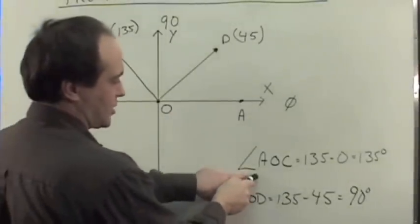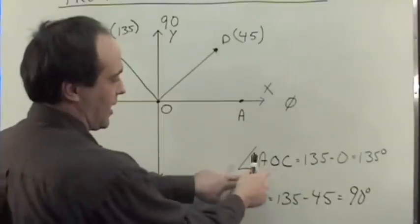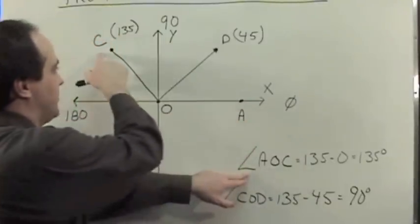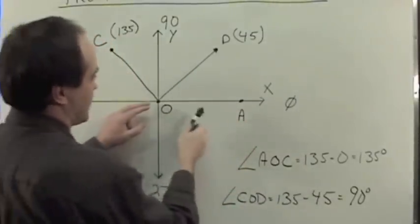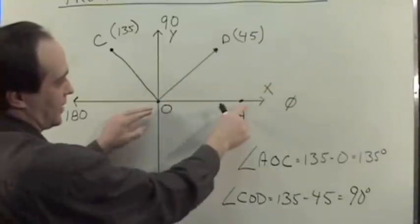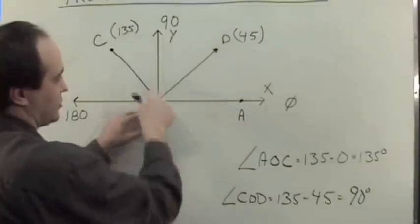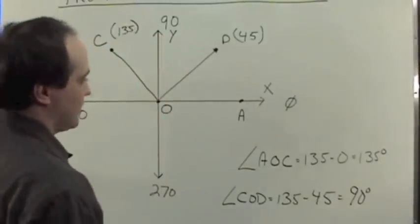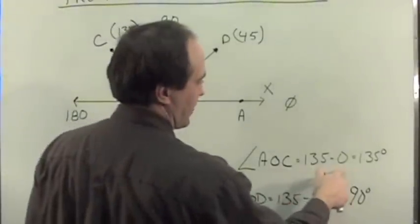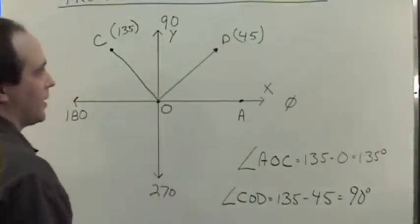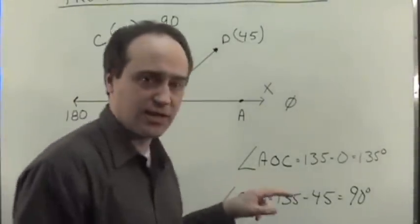This notation here means the angle AOC, from A to the origin to C. And that means this angle, or this arc right here. AOC is 135 degrees. So we see that angle AOC is 135 minus zero, where it's the angle of C minus the angle of A. And that's the notation that we're seeing in the book.